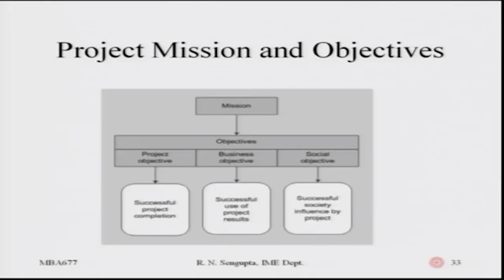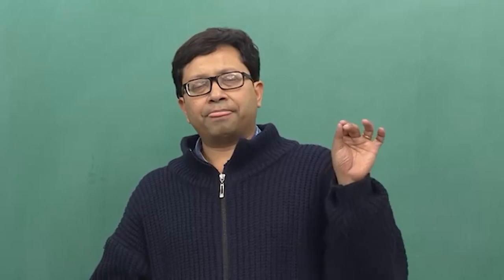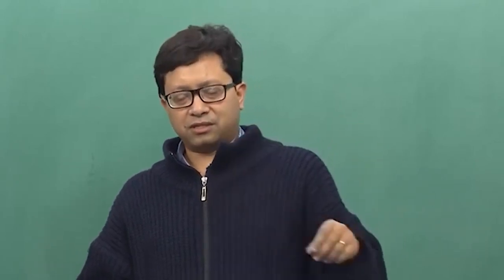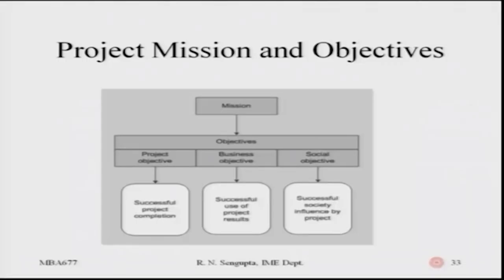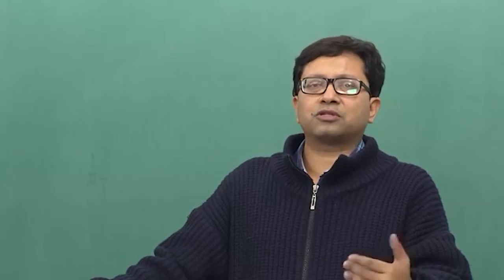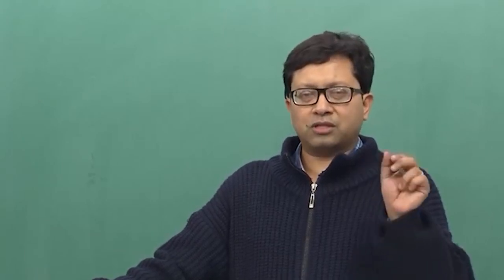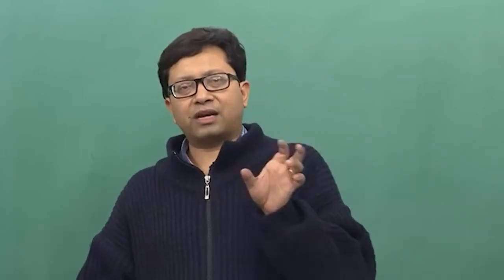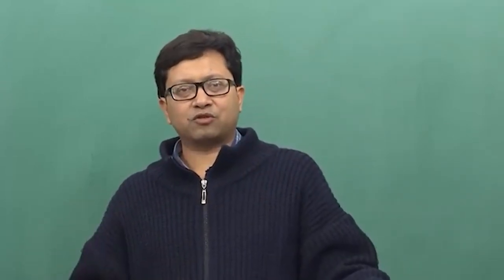Project objectives are basically for successful project completion and successful use of project results - how the results are utilized to have a positive output for the business objective based on which the project was planned. The big business objective is the overall thing, and under that you have different projects. Successful implementation should definitely have a positive effect on the social structure or social norms. All three - project, business, and social - should be aligned to accrue positive benefits to the overall system.